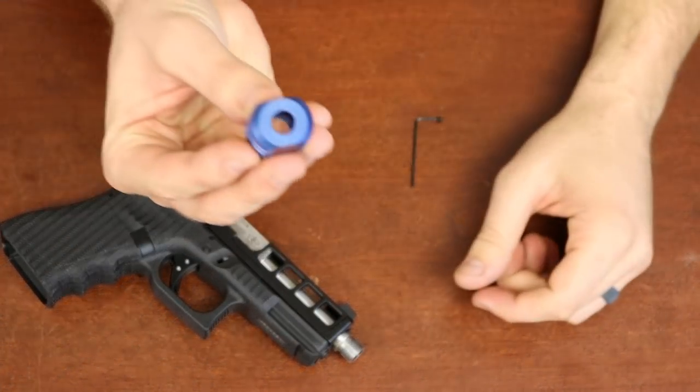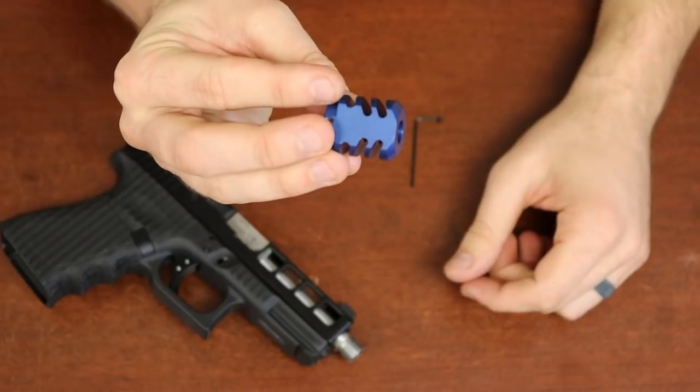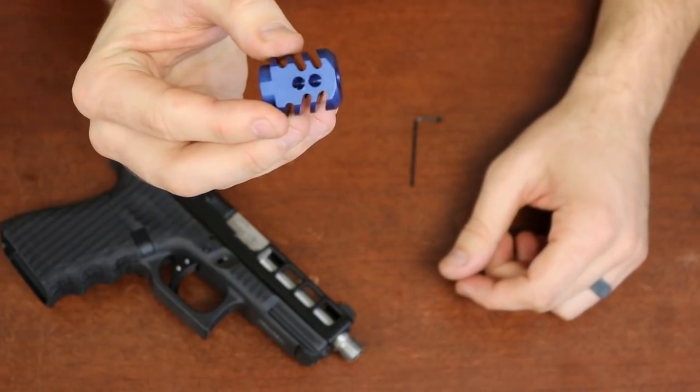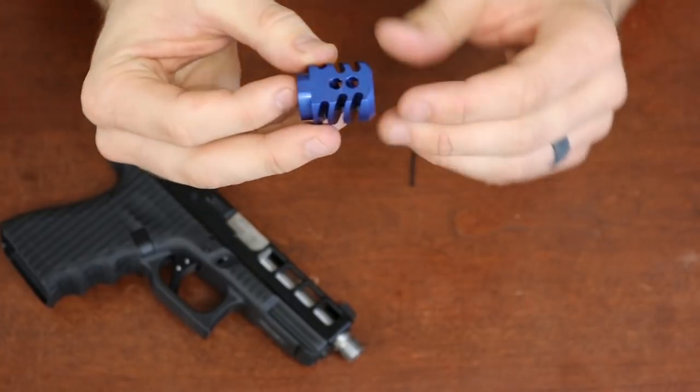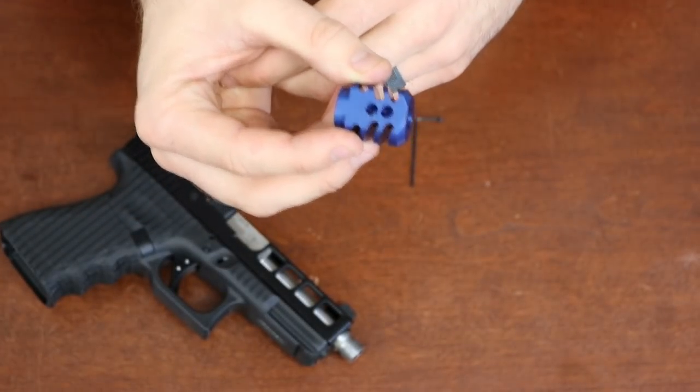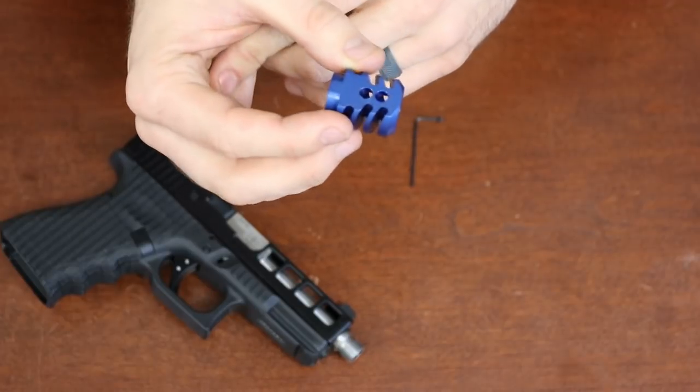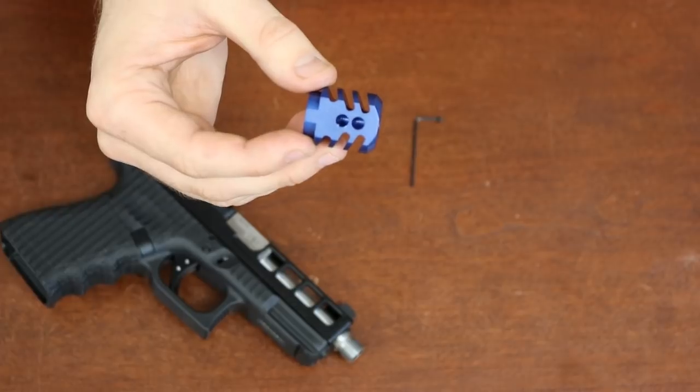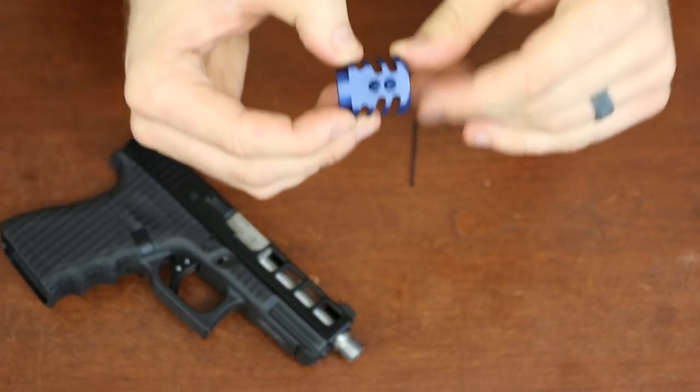This is the Rock Your Glock High Performance Compensator. It's made out of anodized aluminum, has a really lightweight feel to it. You're not going to notice any added weight to the front of your gun, no change in balance. What you are going to notice is a big change in performance.